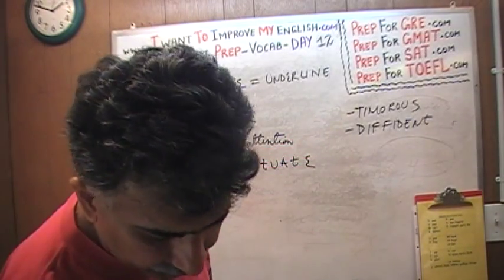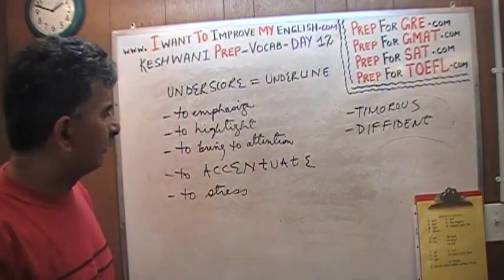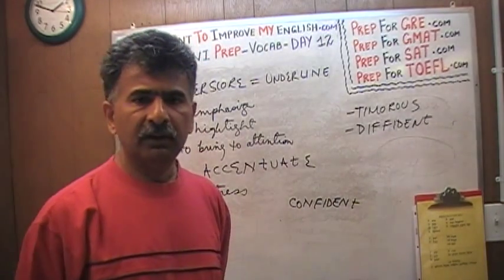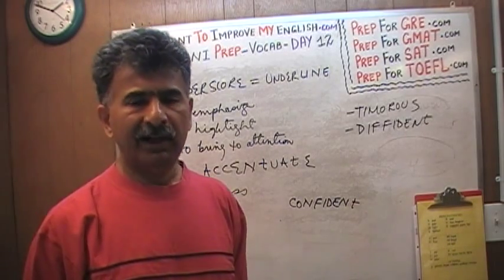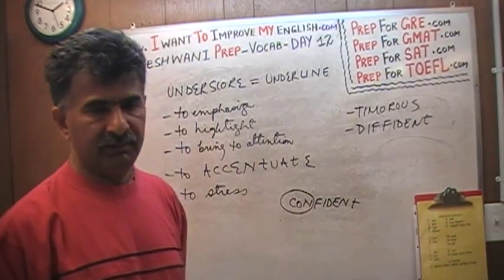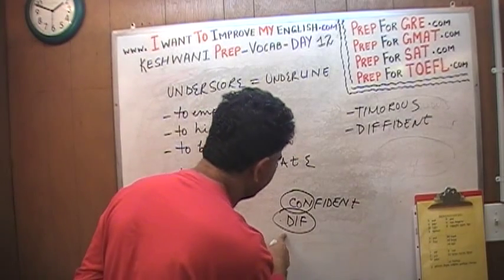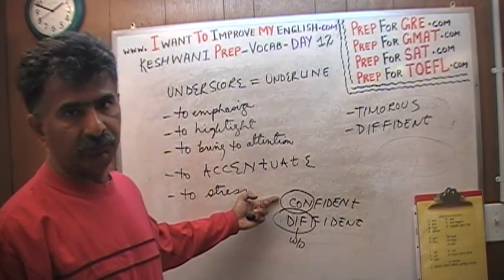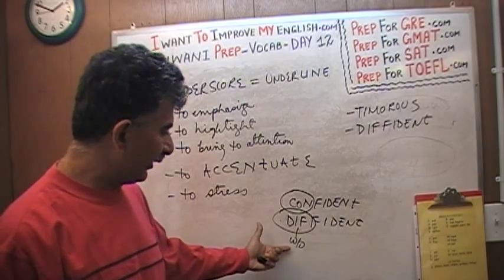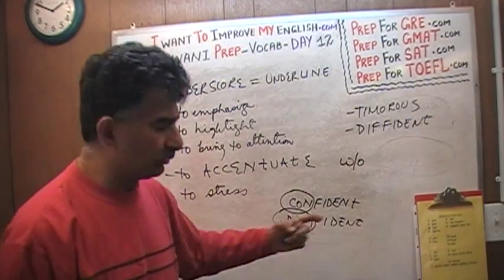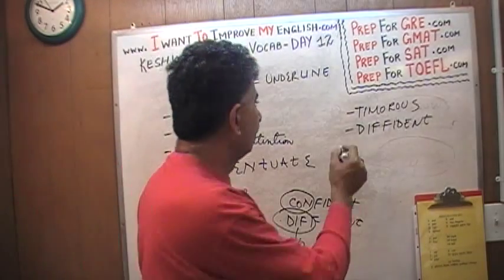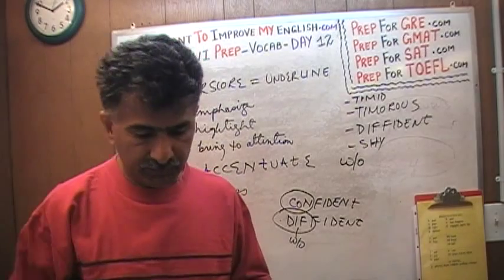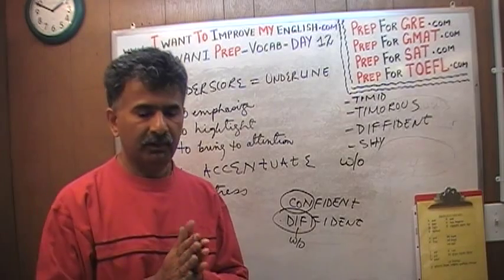Similarly, 'diffident' is an interesting word. Most people know what 'confident' means — a very simple word — but if you ask them for the antonym, they'll have trouble. 'Confident' has the prefix 'con' meaning 'with,' and 'diffident' has the prefix 'dif' meaning 'without.' So confident literally means with self-assurance, and diffident — its antonym — literally means without self-assurance.